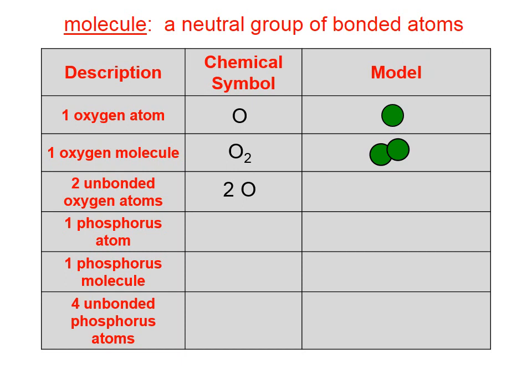If we were to write two unbonded oxygen atoms, we might write a coefficient of two in front of the O, and when we model it, we'll draw those same two oxygen atoms, but you can see that now they are not bonded. Similarly, if we model a phosphorus atom as a red square, a phosphorus molecule, remember that phosphorus is a polyatomic element. It pals around in groups of four. We might model a phosphorus molecule like that.